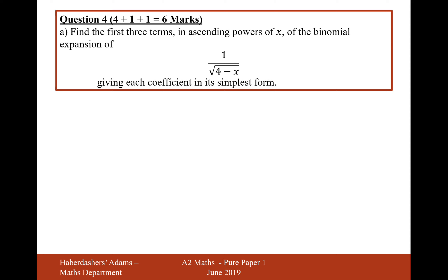Let's remind ourselves of the binomial expansion: (1 + x)^n = 1 + nx + n(n-1)/2 · x² — those are the first three terms. So let's start writing our expression in this form. The first thing to do is write it as (4 minus x) to the power of minus a half, converting the square root to a fractional power and the reciprocal to a negative power.